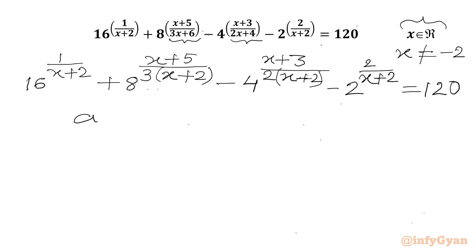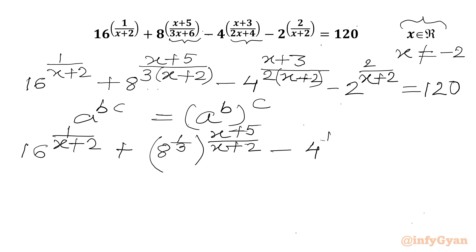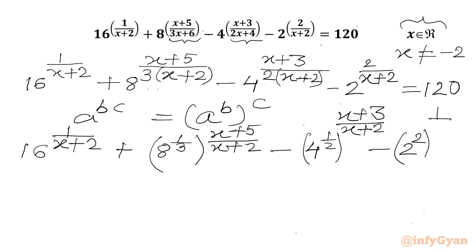Now we know the exponent law: a power (b times c) can be written as (a power b) whole power c. Let's apply this: 16 power (1 over x+2) as it is, plus 8 power (1/3) and then put power ((x+5) over (x+2)), minus 4 power (1 over x+2) and then write power ((x+3) over (x+2)), minus 2 power 2 whole power (1 over x+2). RHS is 120.